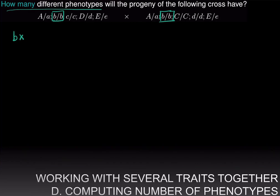We have B: little b over little b homozygote crossed to another little b over little b homozygote. In this case, all the progeny will have the genotype little b over little b, and they will have just one phenotype, which is the recessive phenotype.